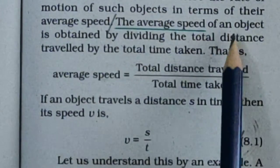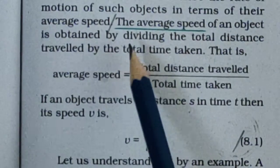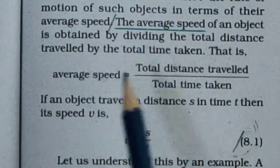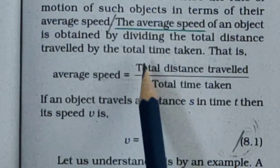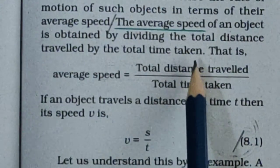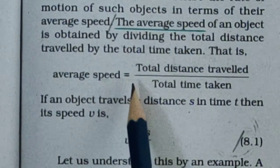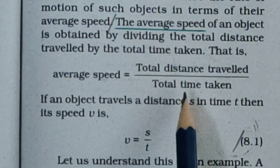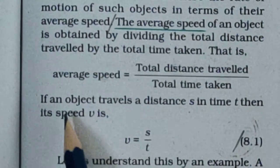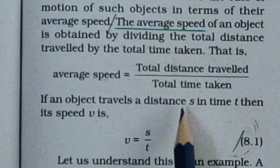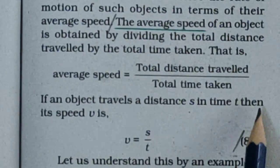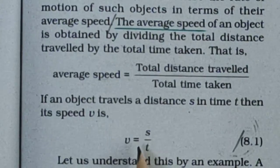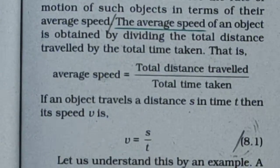The average speed of an object is obtained by dividing the total distance travelled by the total time taken. That is, average speed is equal to total distance travelled divided by total time taken. If an object travels a distance s in time t, then its speed v is equal to s divided by t.